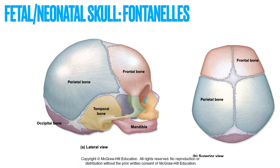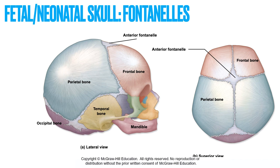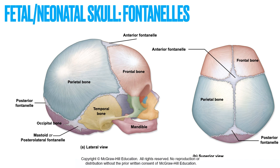Fontanelles are found on the fetal or infant skull — areas of flexible connective tissue, also called the soft spot. They allow flexion of the cranial bones, making it possible for the head to pass through the birth canal, which is why babies born vaginally can temporarily have a cone-shaped head that resolves within a few days. The anterior fontanelle, on the top of the head, is the largest and typically closes around 15 months after birth. The posterior fontanelle typically closes around 9 months. The mastoid and sphenoidal fontanelles typically close shortly after birth.